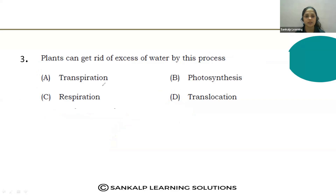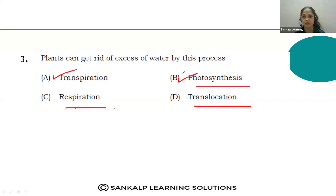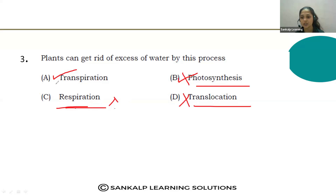Third question: Plants can get rid of excess water by which process — transpiration, photosynthesis, respiration, or translocation? Photosynthesis is the production of food, respiration is the exchange of gases, and translocation is related to food transportation through the phloem. The correct answer is option A, transpiration.